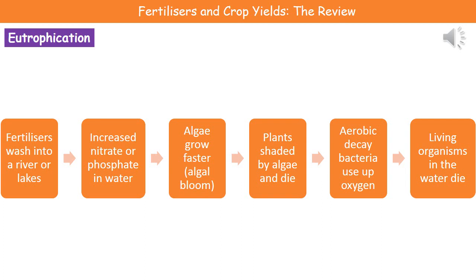In terms of how eutrophication actually comes about: first, fertilizers wash into rivers or lakes, which causes an increase in the amount of nitrates or phosphate in the water. Because of the higher nitrate and phosphate levels, algae grow much faster and create something called an algal bloom. This means the surface is covered by algae, so the plants normally growing underwater are too shaded and therefore die.